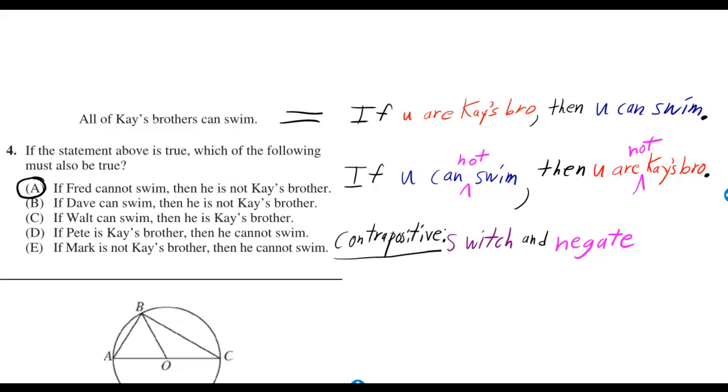You can rephrase all of K's brothers can swim to if you are K's bro, then you can swim. Means the same thing.